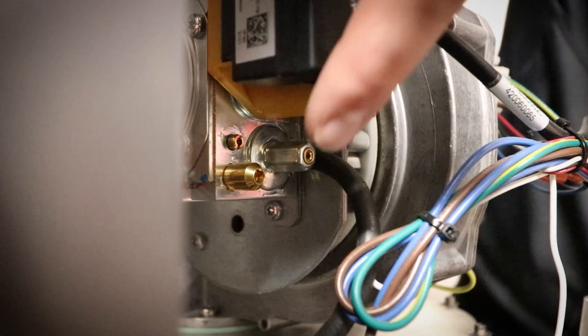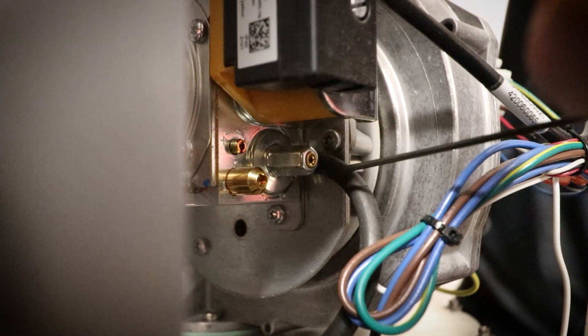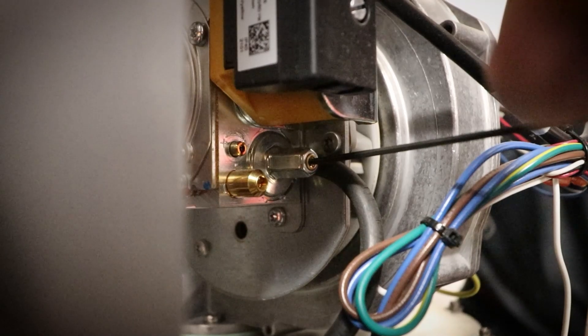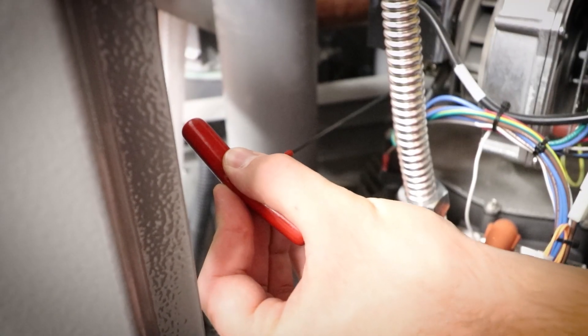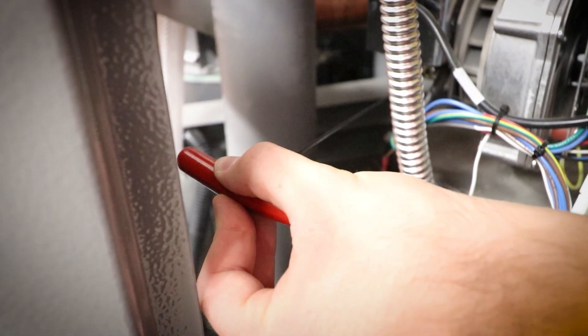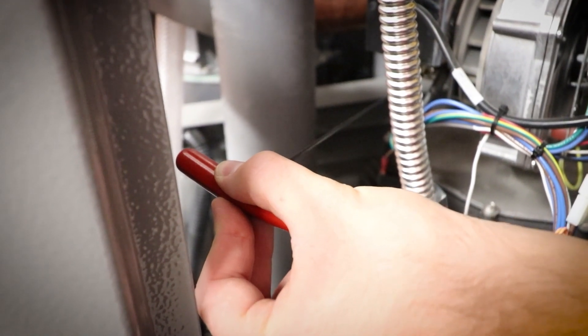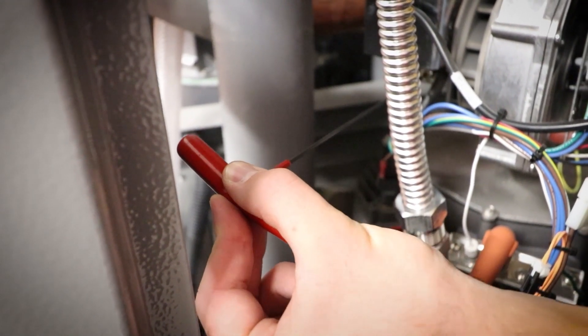If an adjustment is needed, locate the low fire screw on the gas valve and turn it clockwise to increase the CO2 percentage and counterclockwise to decrease. The low fire screw is very sensitive, so only make 1/8 turn adjustments at a time.